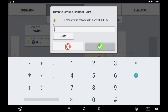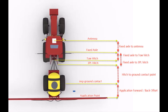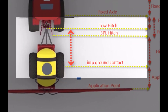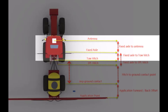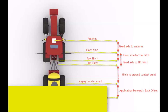If selecting a drawbar hitch type, you will need to enter the hitch to ground contact point. This is the distance between the point where the implement couples to the machine and where the implement touches the ground or rotates from. For example, this would be the axle of a single axle boom spray, the midpoint between axles on a tandem axle implement, or the center row of tines on a planter or tillage type machine. This measurement is used in conjunction with the vehicle's measurements to calculate the vehicle modeling as the vehicle and implement articulate.